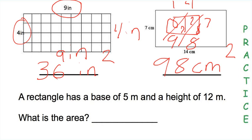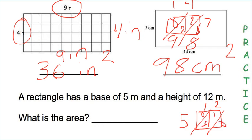For the final problem it's presented as a word problem — you'll see this a lot. It says a rectangle has a base of 5 meters and a height of 12 meters; what is the area? Base times height, so 5 times 12. Setting up our lattice box: 5 times 1 is 5, 5 times 2 is 10, add them up and we get 60. So the area is 60 meters squared, because we're dealing with a two-dimensional shape.